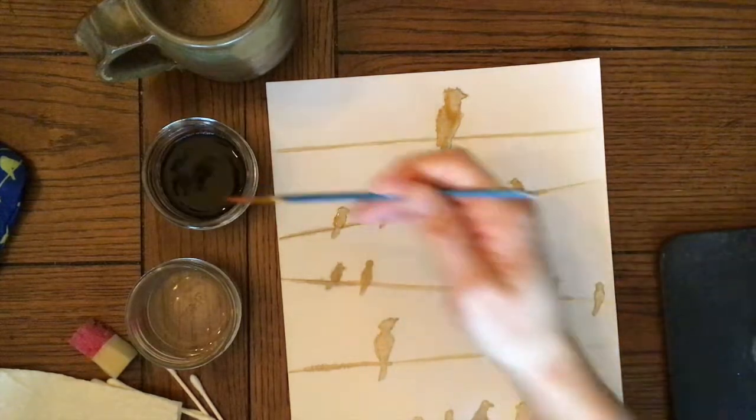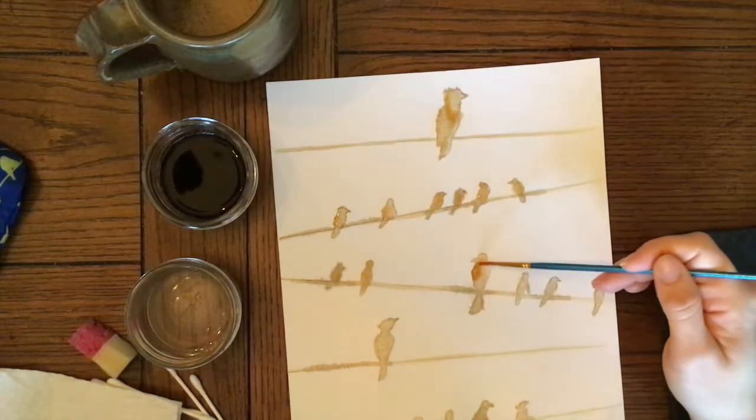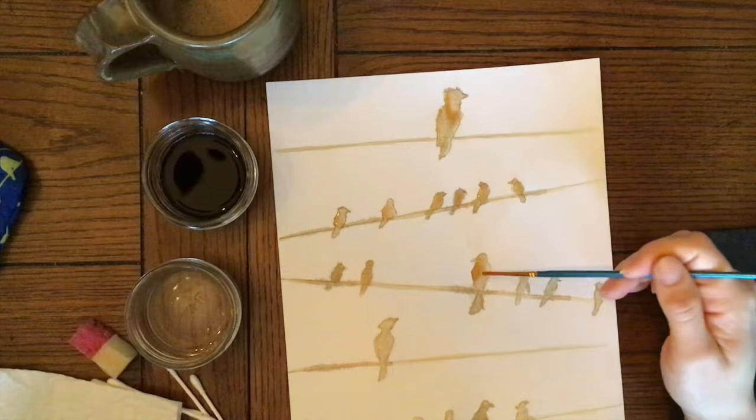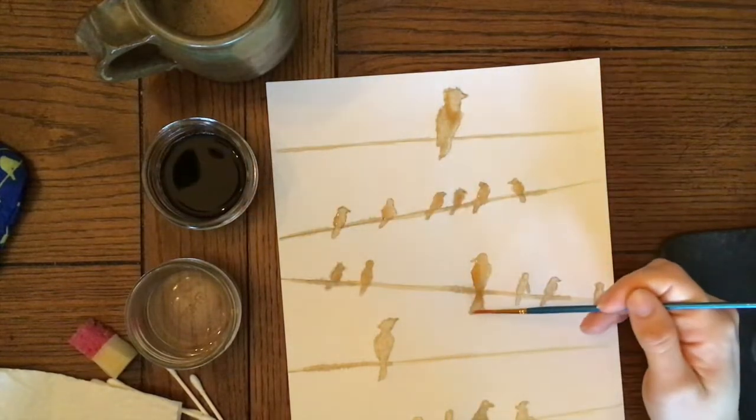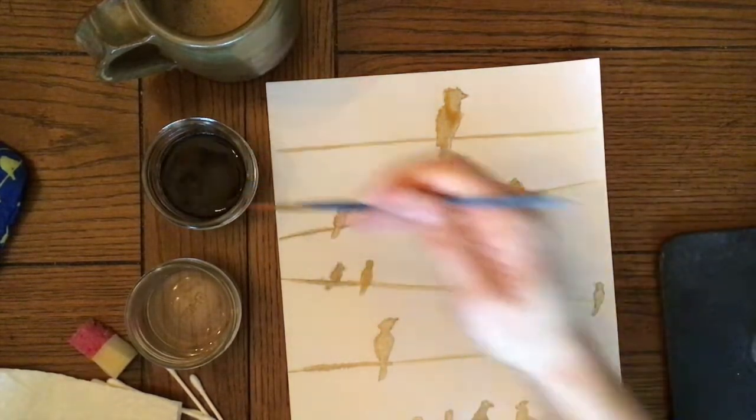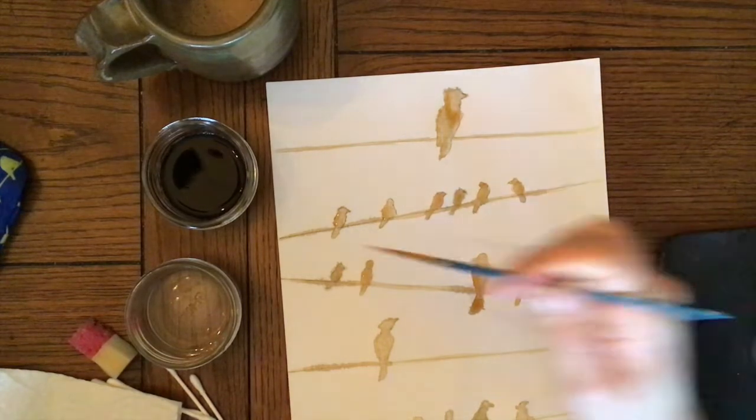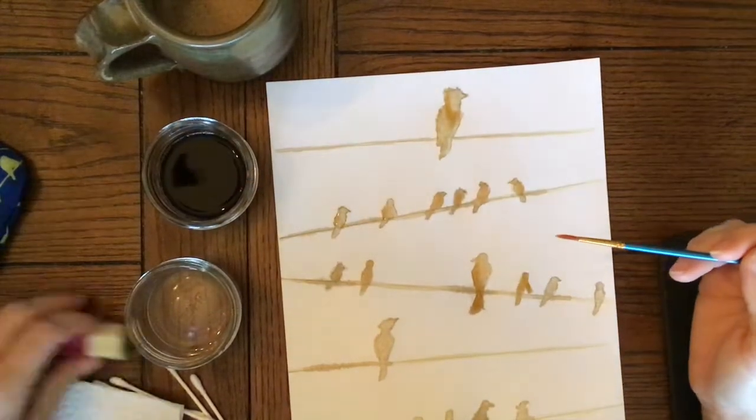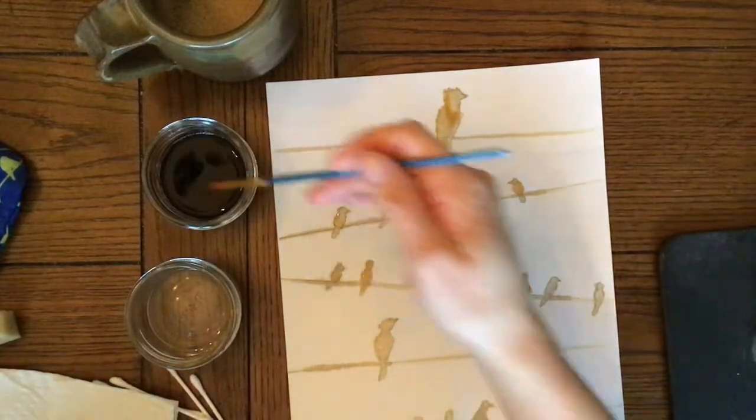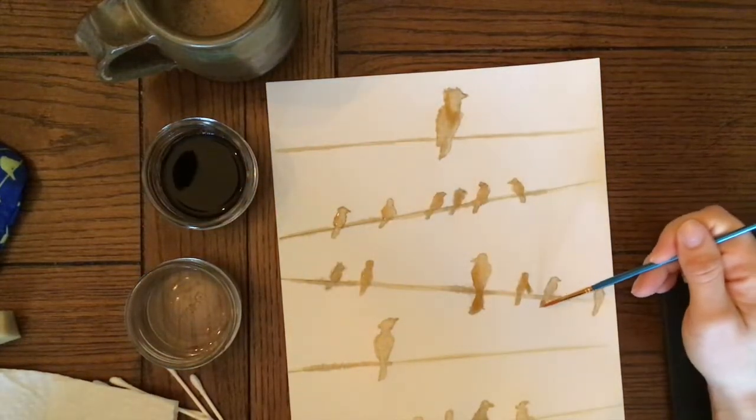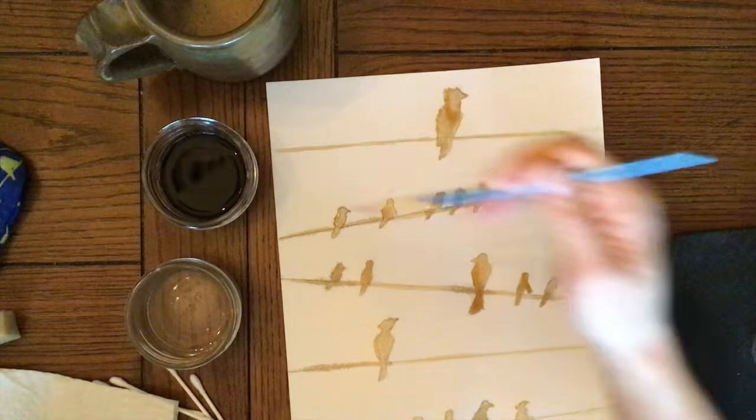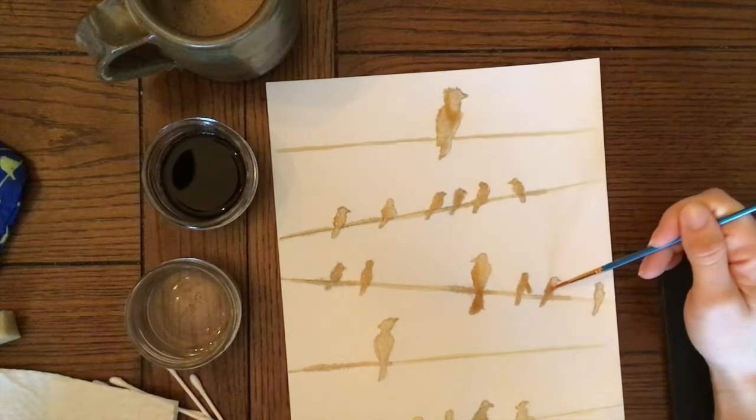You can also paint with tea, but it's even lighter than coffee. You can stain your paper with tea and draw on it also, or stain your paper with coffee first. Like if I sponged on the coffee and then let it dry, I could draw on top to make it look like an old piece of paper, which works great if you're trying to make something like a treasure map.